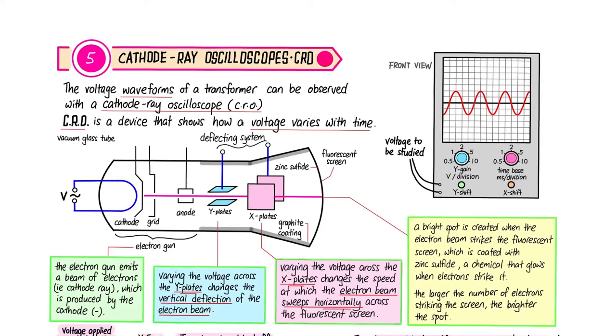In this video we're going to learn about the cathode ray oscilloscope. In short we call it the CRO, and basically it's a device that shows how a voltage varies with time, as you can see on the screen of the CRO.